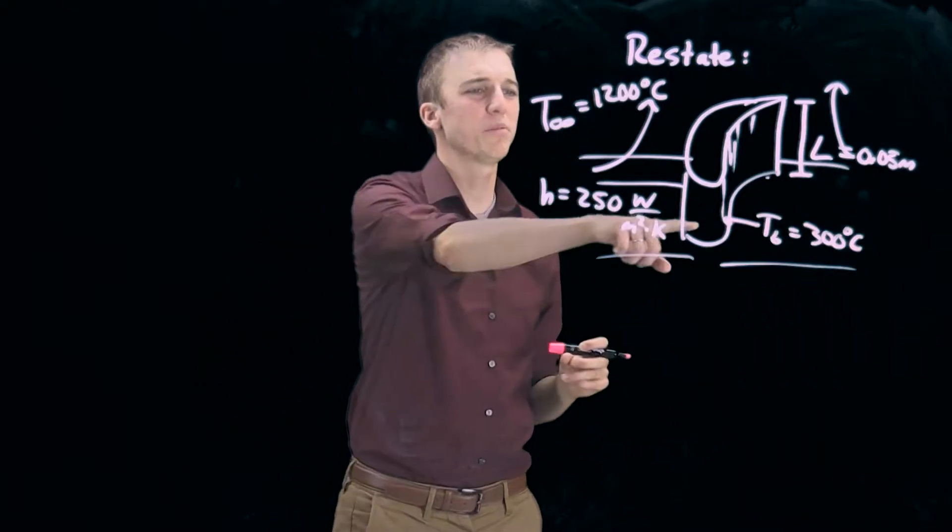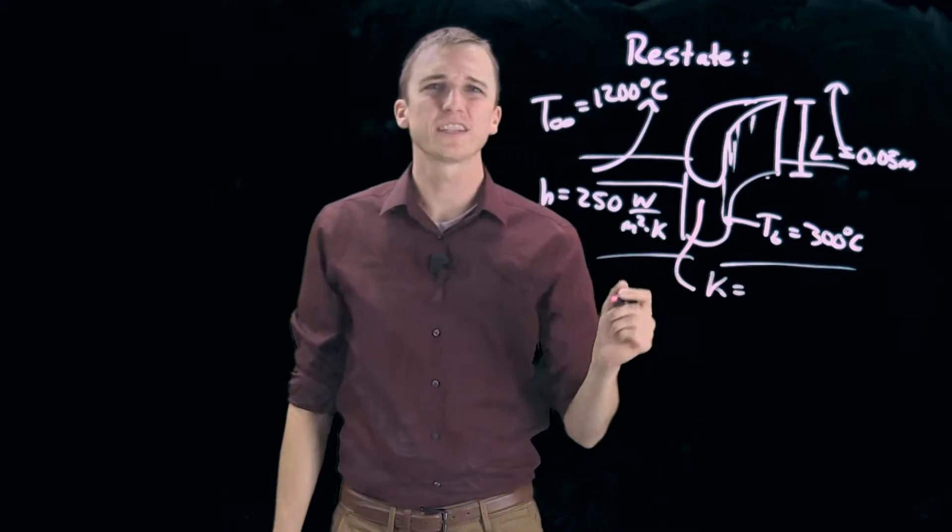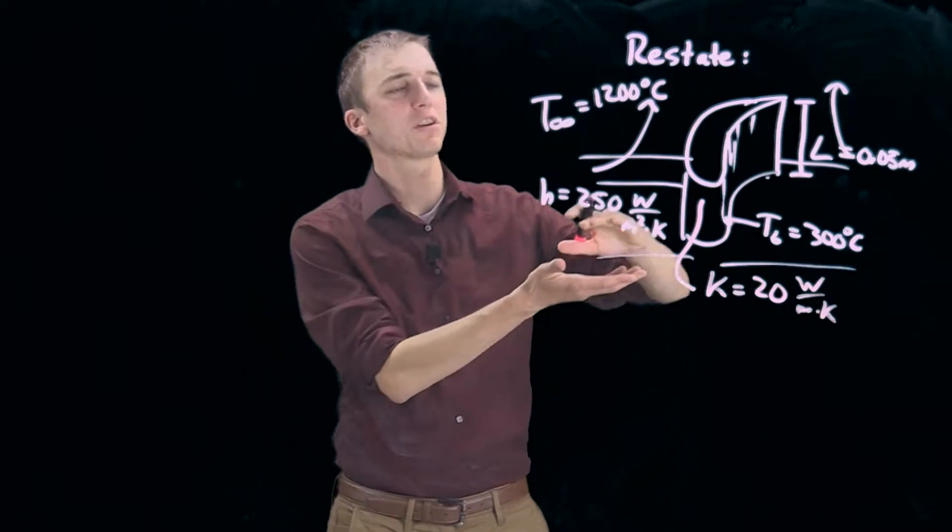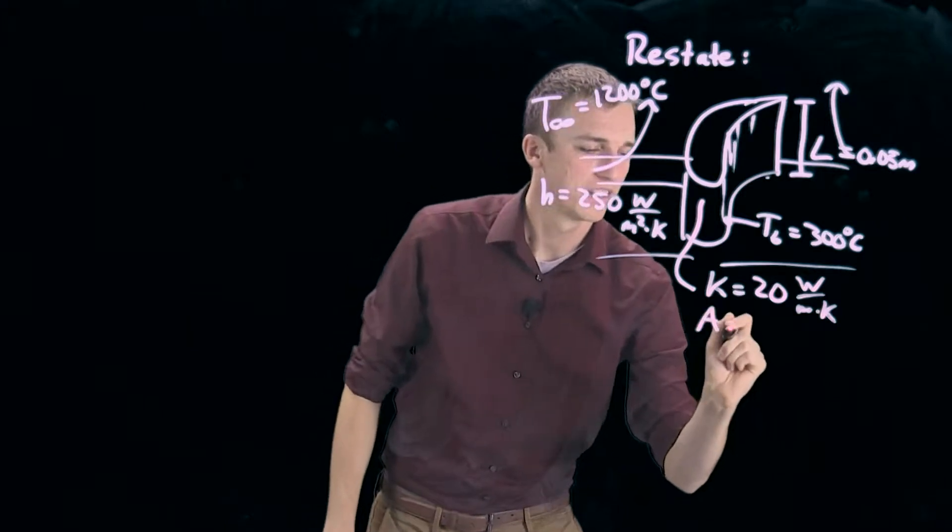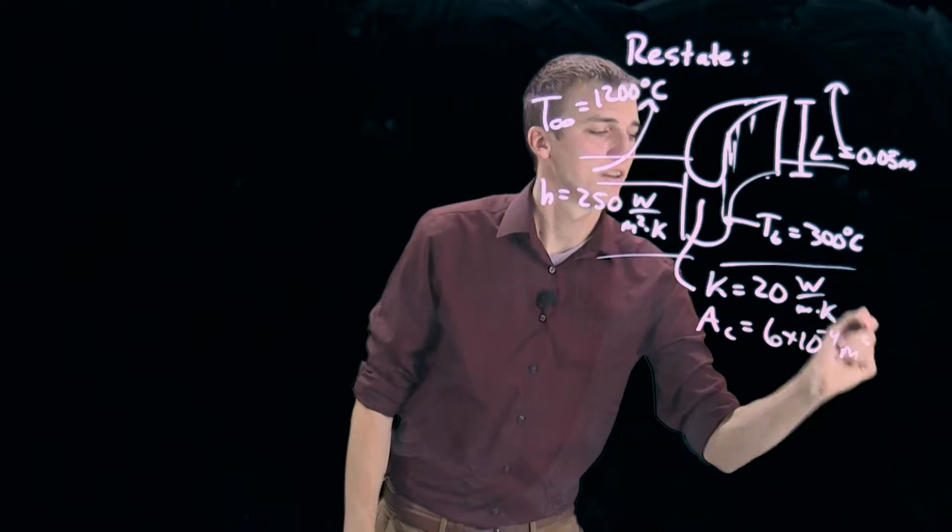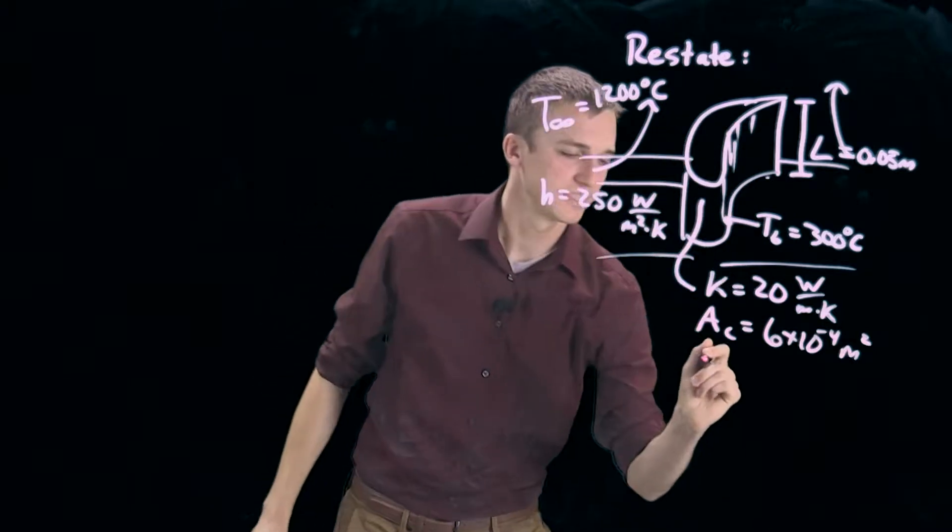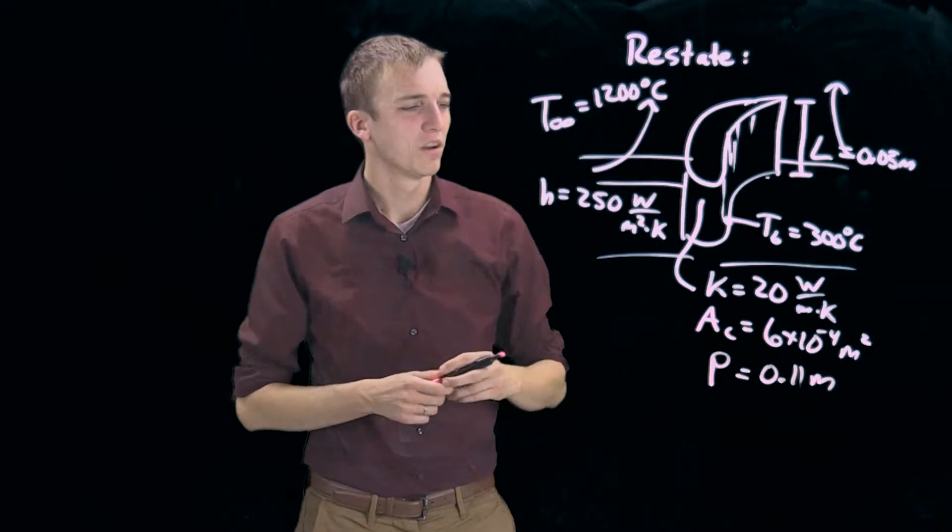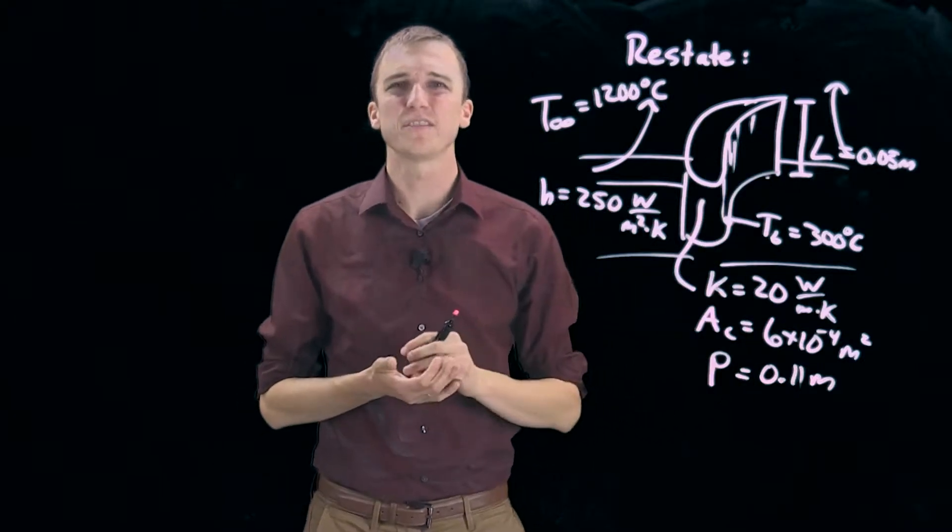Now what we know about this actual fin that is extending upwards is its thermal conductivity, which is 20 watts per meter kelvin. We also know the cross-sectional area. So if we take a slice out of the middle, we would know the area of that slice, which is 6 times 10 to the negative fourth meter squared. Finally, of that slice we would also know what the perimeter is, which is 0.11 meters.